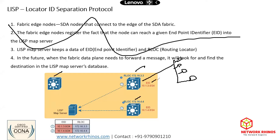That subnet is termed as EID — endpoint identifier — which means I can reach 10.1.3.0/24 via switch three. Similarly, I can reach 10.1.4.0/24 via switch four's RLOC IP.